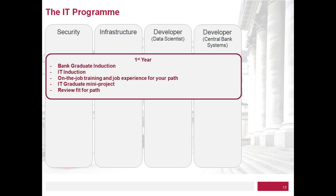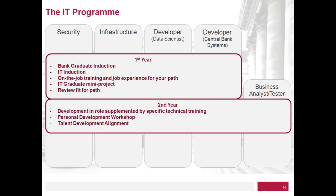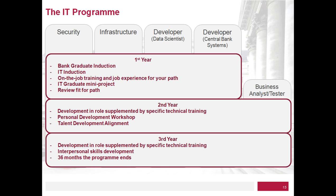As we go through the first year, we also review fit to path. We've discovered that sometimes upon joining, people find they have a flair for something on one of the parallel paths. It also gives us a chance to open up the business analyst and tester path that Helen was talking about earlier. In the second year we continue with development in role and training depending on the path you're in. There's also a personal development workshop — something all graduates in the bank take part in — about your personal development and how you see your career unfolding. We also then have a talent development alignment looking forward to your career.